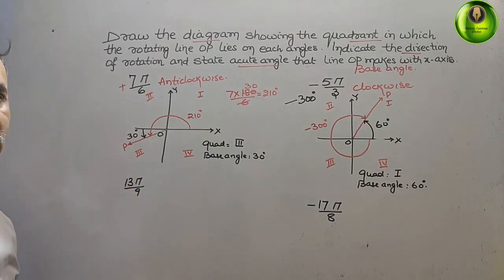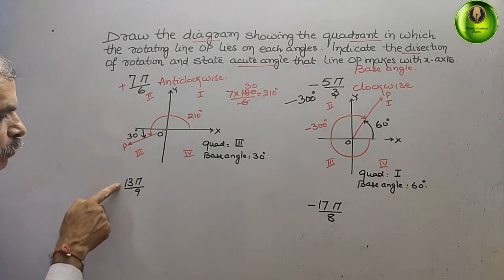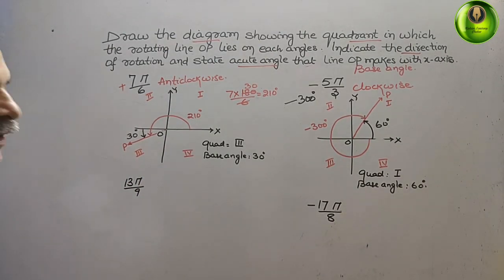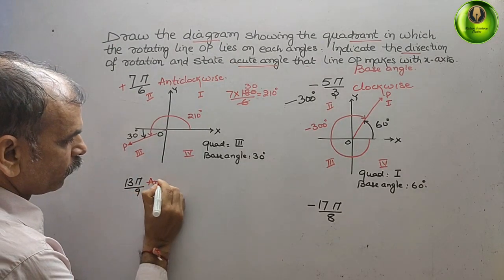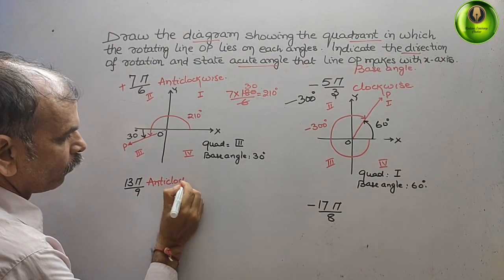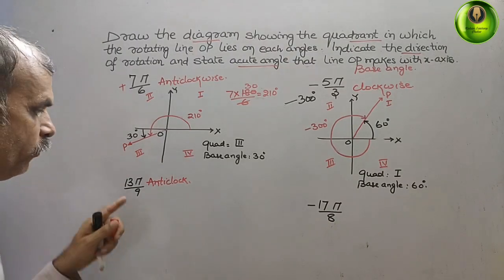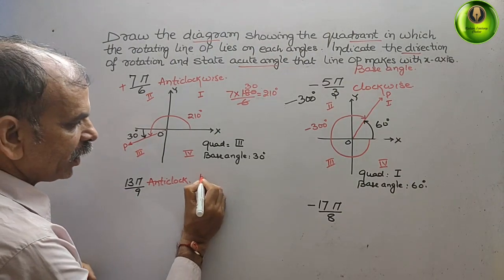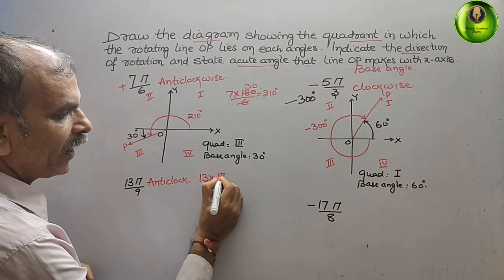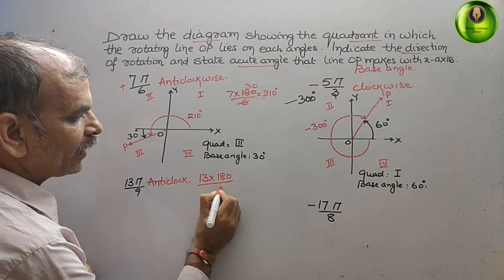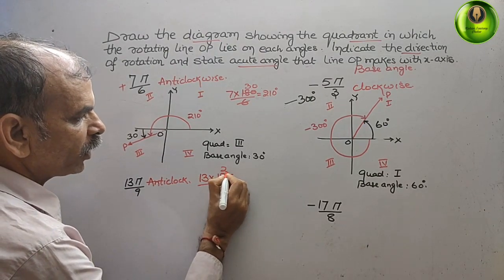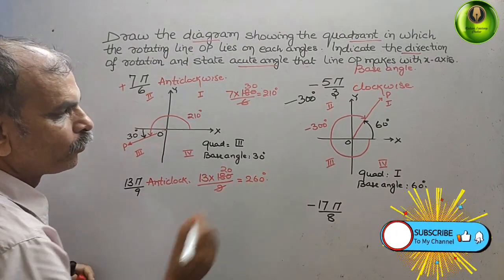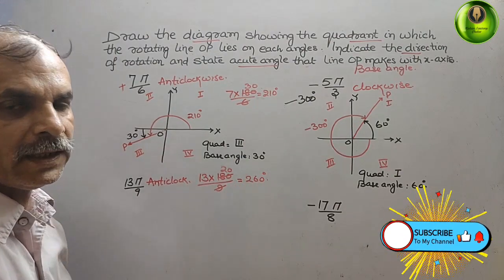Next, they have given 13π/9. This is positive, so it is anticlockwise. We calculate the angle: 13 × 180 / 9. Simplifying, 180 / 9 = 20, so 13 × 20 = 260°.